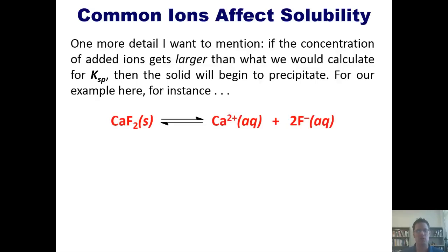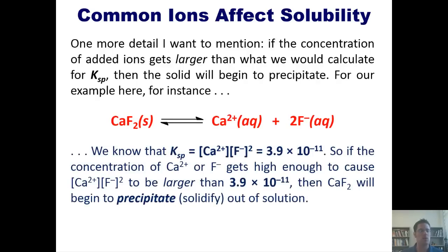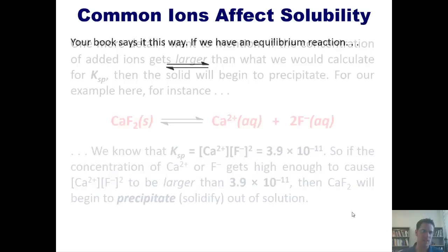For example, here for instance, where we've got calcium fluoride dissociating into calcium and fluoride ions, we know that the KSP equals 3.9 times 10 to the negative 11th. So if the concentration of calcium cation or fluoride anion gets high enough to cause the product of these terms to be larger than 3.9 times 10 to the negative 11th, then calcium fluoride will begin to precipitate or solidify out of solution.